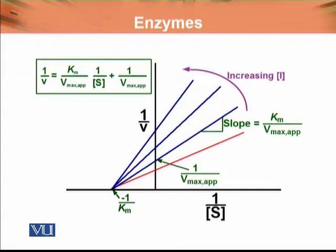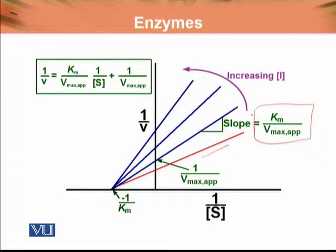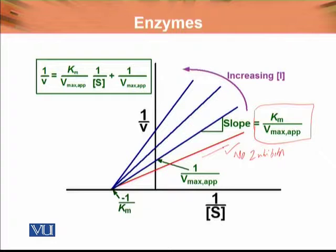We can see this Lineweaver-Burk plot here. Normally, the slope is denoted as KM over Vmax. In the case where there is no inhibitor, this line intercepts 1 over Vmax on the y-axis and negative 1 over KM on the x-axis.